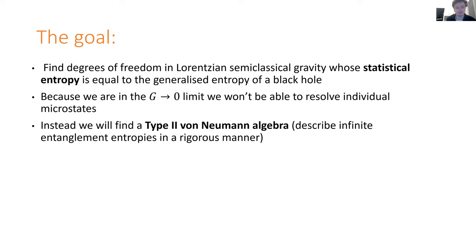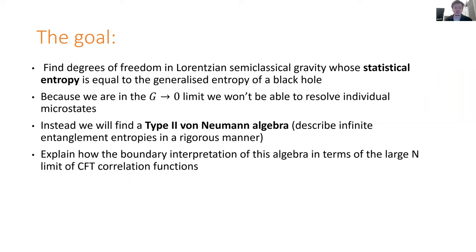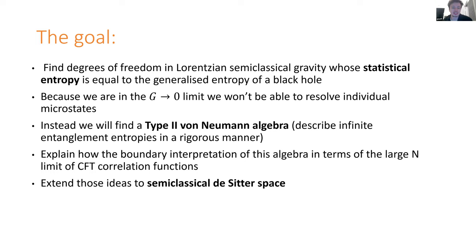We're going to have an infinite number of states involved, but we're going to be able to compare the number of states — the entropies of different states — and we're going to get finite differences between them and match those. I'll then briefly explain how to interpret this algebra from a boundary CFT point of view, in terms of the large N limits of CFT correlation functions and constructing a large N theory out of that data, and talk about how those ideas extend to semi-classical de Sitter space and how you can interpret generalized entropy in that context.